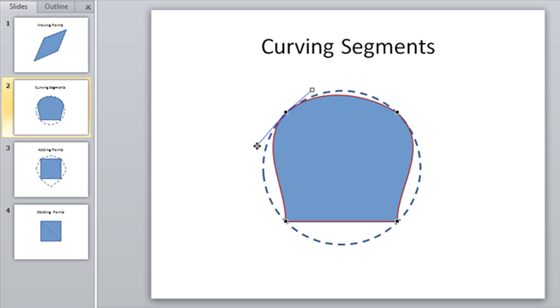As you can see, as we're moving it, the object will become more and more rounded. The longer you make a segment, the wider the curve. The more shallow or closer to the Edit Point, the more shallow the curve.